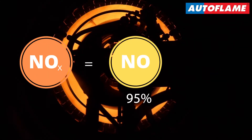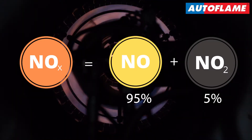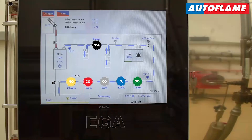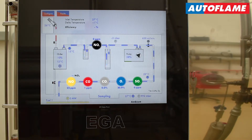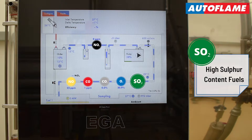NOx is comprised of around 95% NO and 5% NO2, so if accurate NOx measurement and reporting is necessary, then the NO2 cell is required. Otherwise, the EGA will calculate the NOx from the NO. We would recommend the SO2 cell for high sulfur content fuels, such as heavy oils.